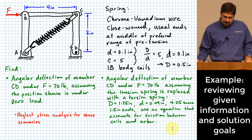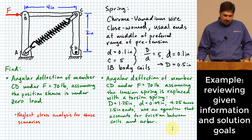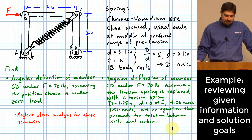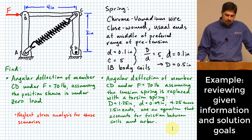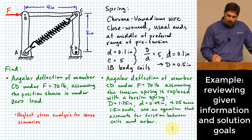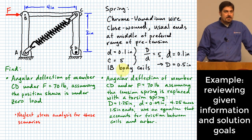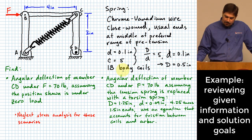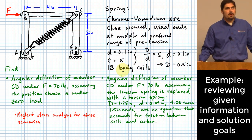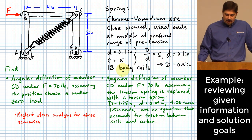We're going to find the angular deflection of member CD in both cases under 70-pound loads. In the first case we use an extension spring with given parameters: wire diameter, spring index, number of body coils, etc. In the second case we use parameters for a torsion spring applied at joint D.